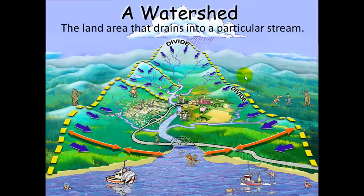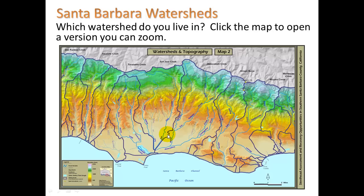The watershed is the land area that drains into a particular stream. We see rain hitting the side of a mountain and flowing by gravity along the surface into low points, which become creeks, then streams, then rivers — ultimately all rivers flow back to the ocean. The area of land that drains into a particular stream is called the watershed. Here's a map of the Santa Barbara watersheds.